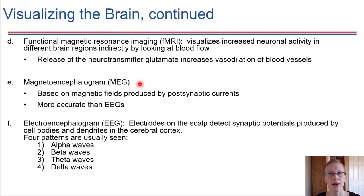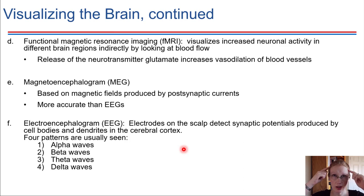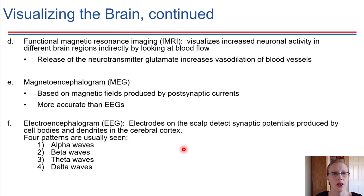MEGs are pretty accurate — more accurate than EEGs, which is the last visualization technique we'll mention here. EEGs, or electroencephalograms, are a bit more familiar. You've probably seen them in movies — electrodes attached to the scalp that can detect synaptic potentials taking place on those surface cells, really focused on the gray matter on the surface of the cerebral cortex.